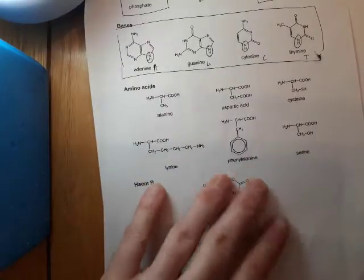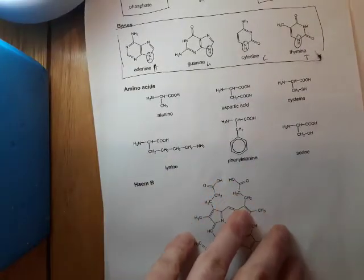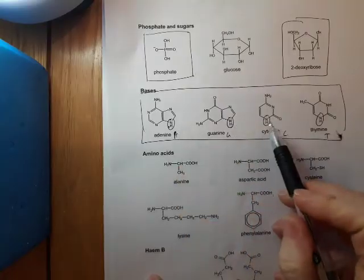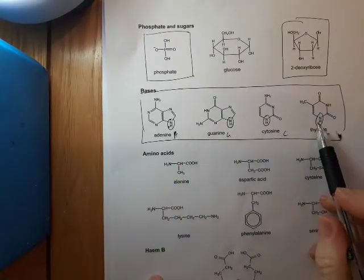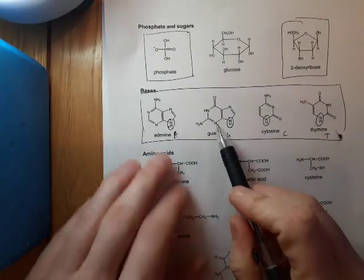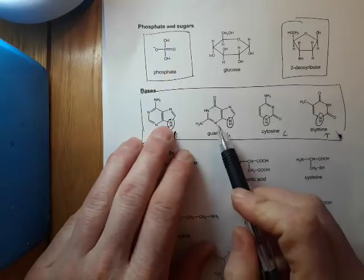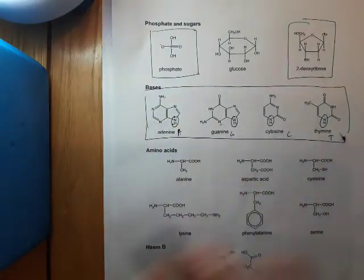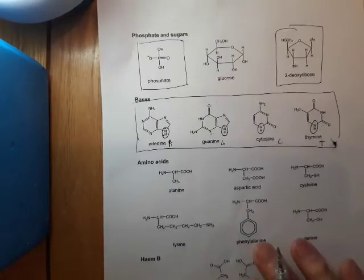Let's have a look at that sheet again. I've circled these four NHs because those are the NHs that the bases bond through. There are other ends and if you haven't practised this, you might try to bond it through the wrong place.